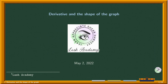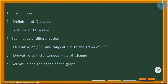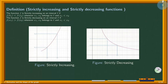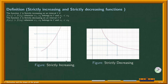In this section we discuss the derivative and the shape of the graph. The function f is strictly increasing on an interval I if f(x1) is less than f(x2) whenever x1, x2 belong to the interval I and x1 is less than x2. If this is our function and this is the interval I, we pick any two inputs x1 and x2.